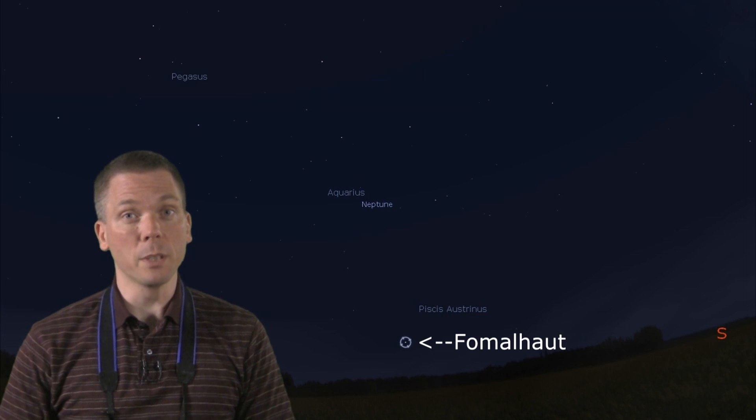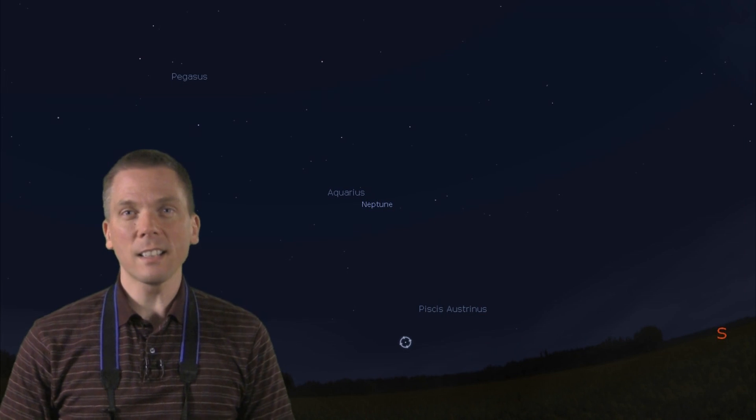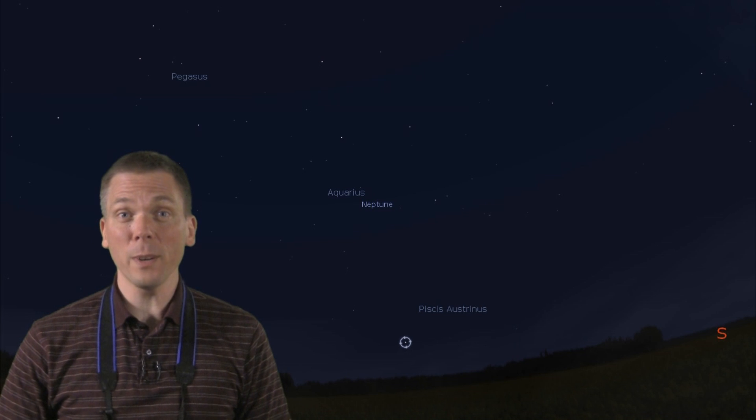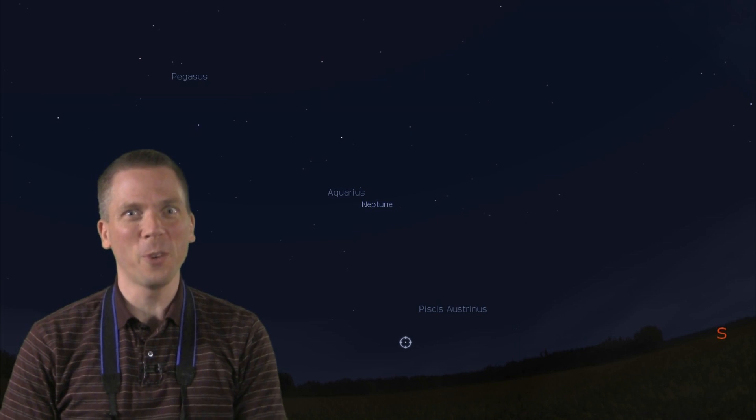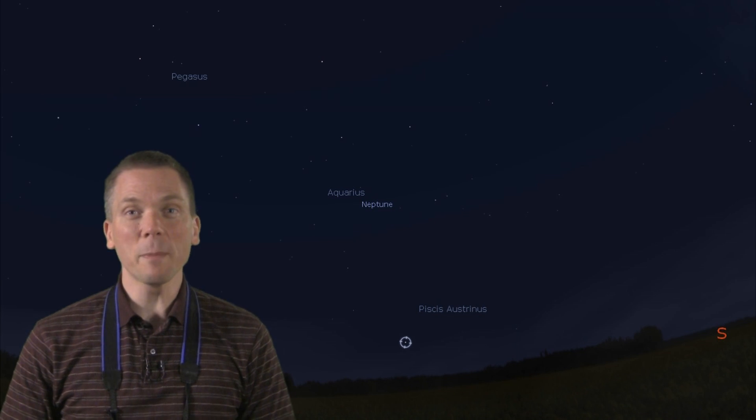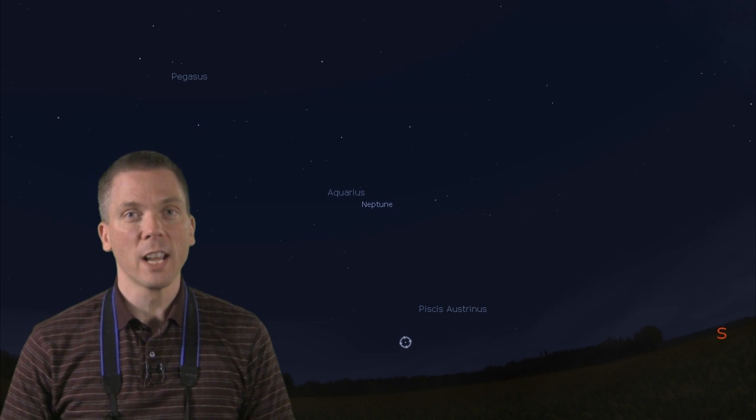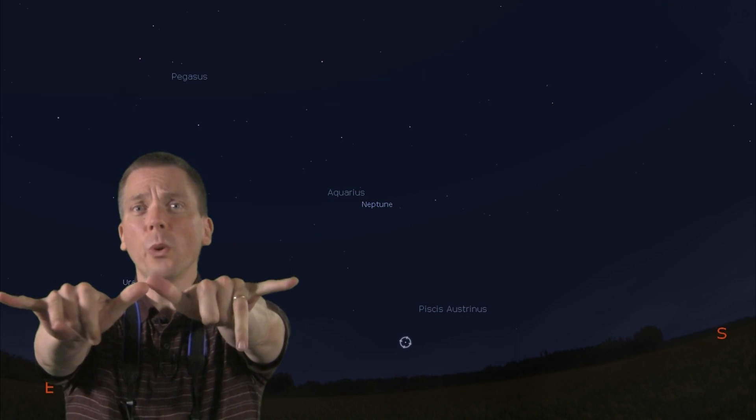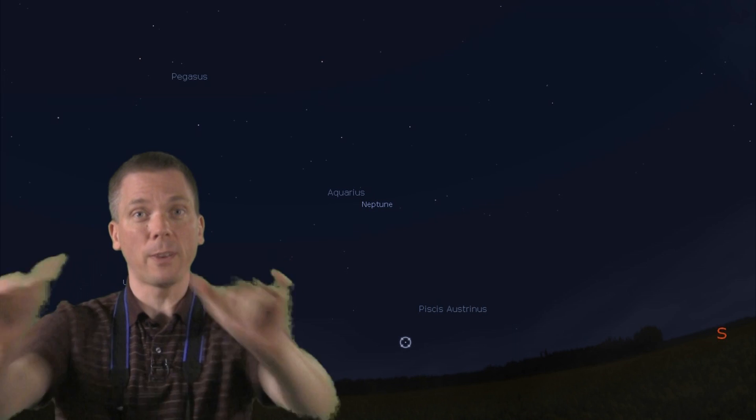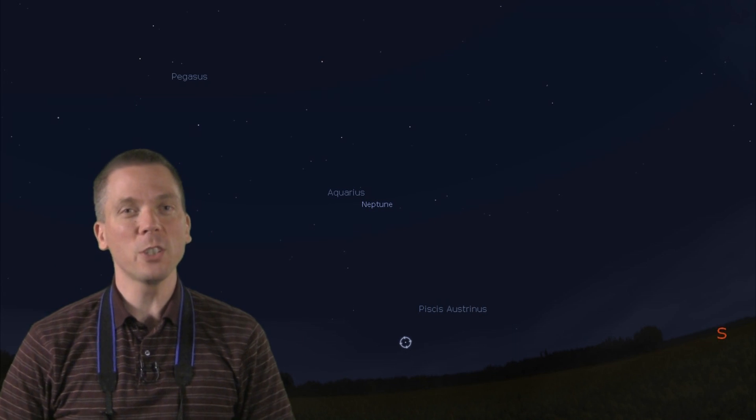Aquarius takes up the space in between, but with that constellation's brightest star at only magnitude 3, you won't mistake any of them for Fomalhaut. Neptune is just about halfway in between these two bright stars, and you could perhaps use the dual thumb pinky measuring tool to find the area, but that can be tough to do accurately.